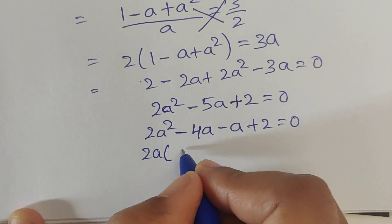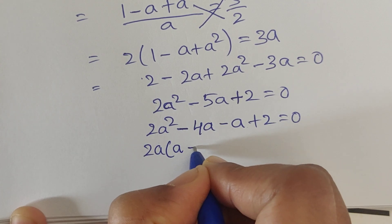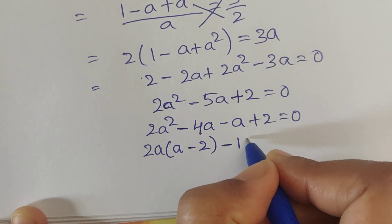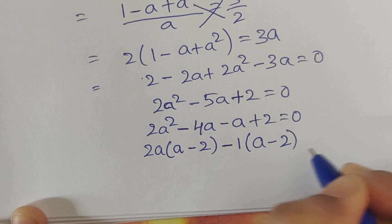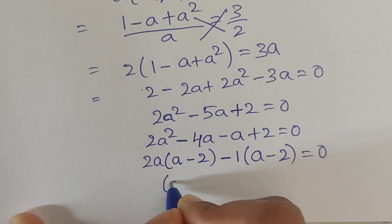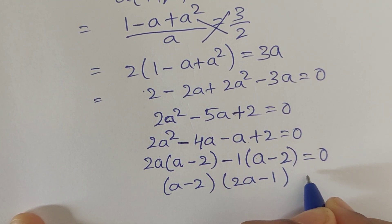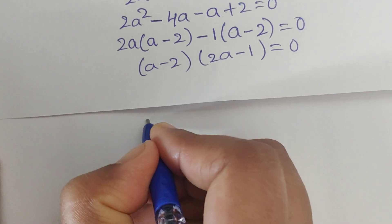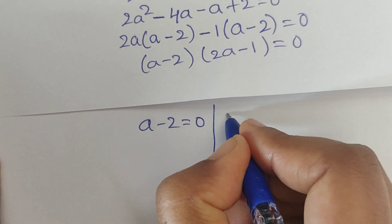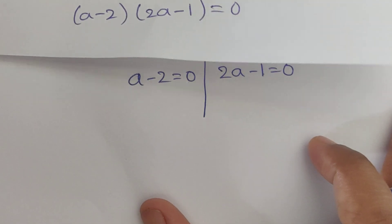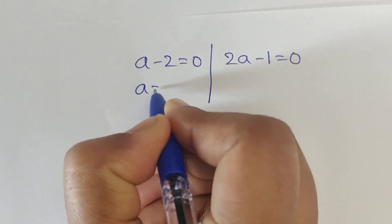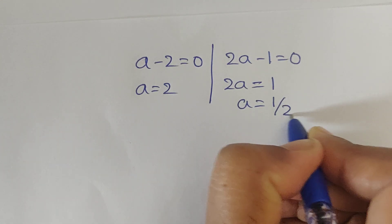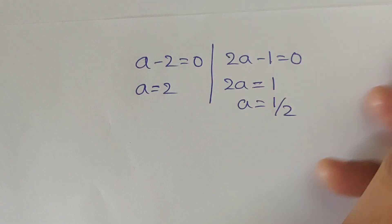In the first two terms we take out 2a as common, giving 2a(a minus 2). In the last two terms we take out minus 1 as common, giving minus 1(a minus 2). So (a minus 2)(2a minus 1) equals 0. Splitting into two parts: a minus 2 equals 0, giving a equals 2; and 2a minus 1 equals 0, giving a equals 1/2.